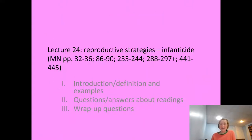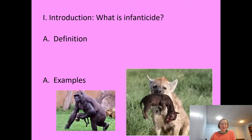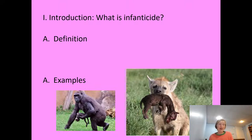Infanticide — we're going to introduce it and then talk about some of the specific readings. First of all, what is it? It's the killing of infants or young by members of the same species. That means a member of a species will attack and kill a young of its own species in its own population or in a neighboring community. And it happens frequently.